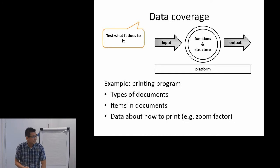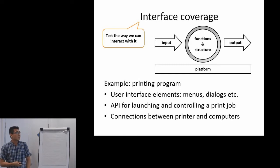Next, data. This one is about everything that the product processes. We are looking at input and output. And then next one, interface coverage. That includes user interface, like menus or dialogues, and any API that other programs can rely on the product.